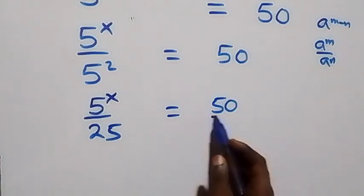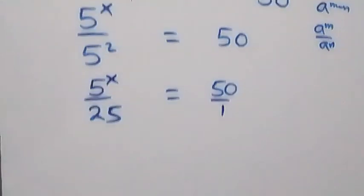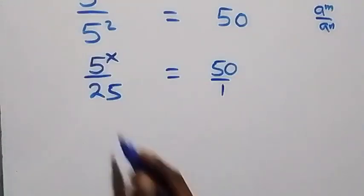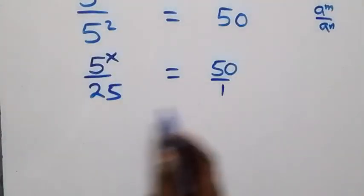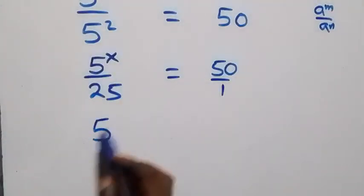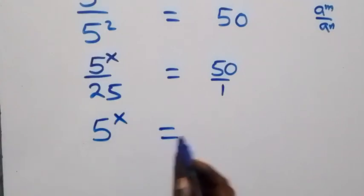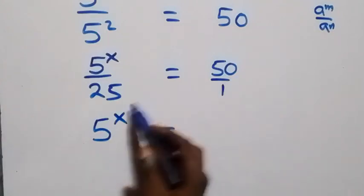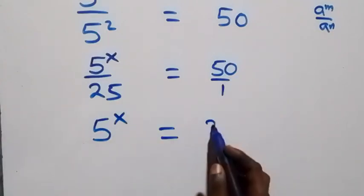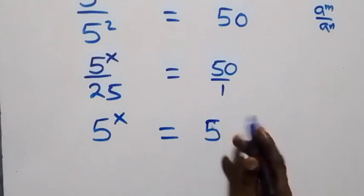We dissolve 50 over 1. Then when we cross multiply, 5 raised to power x times 1, we have 5 raised to power x equals to 50 times 25 on this side.